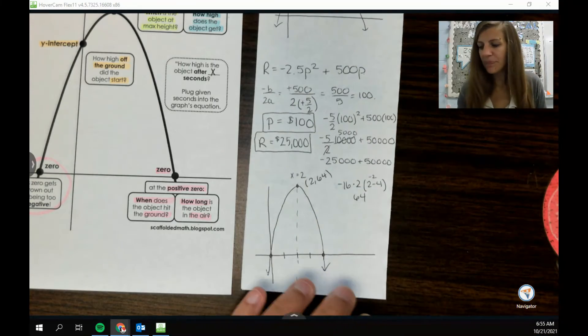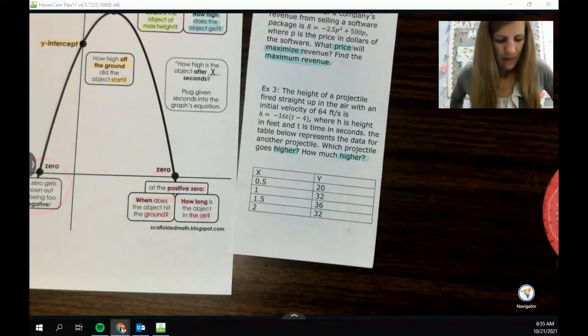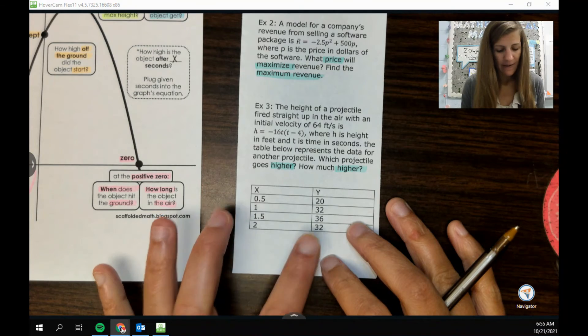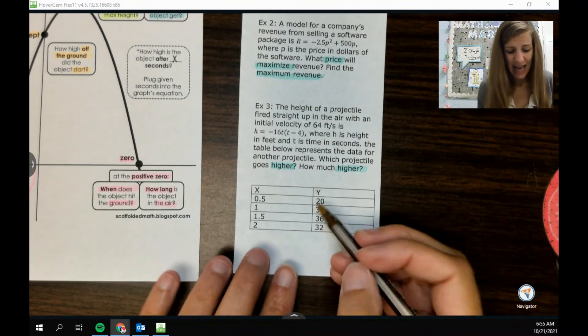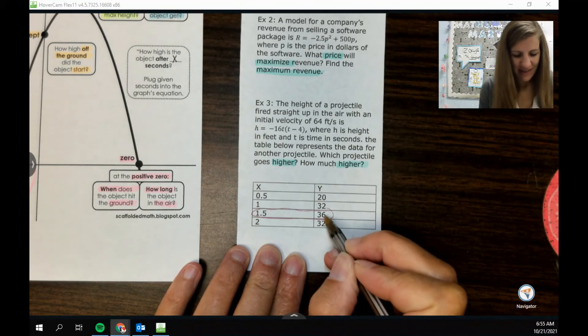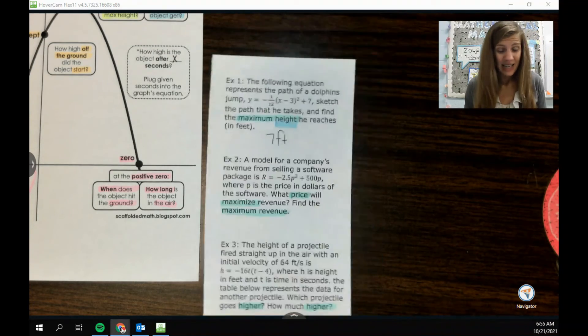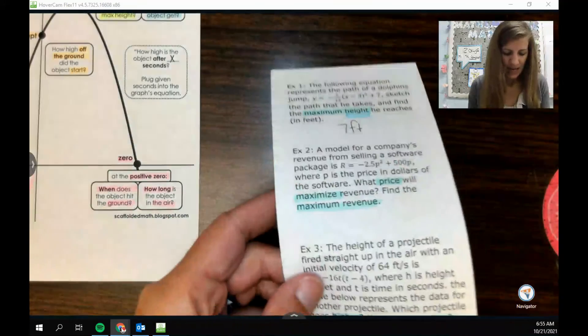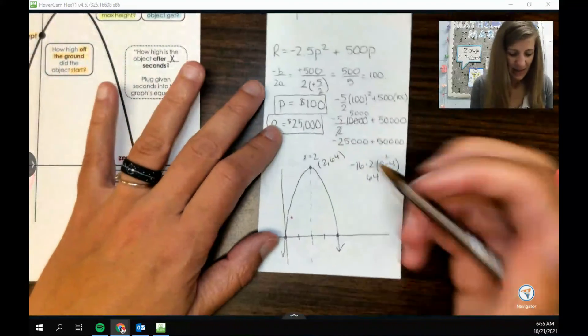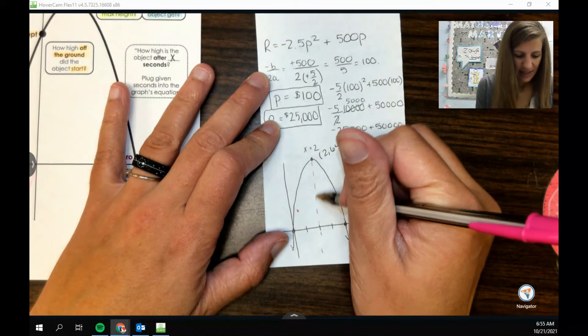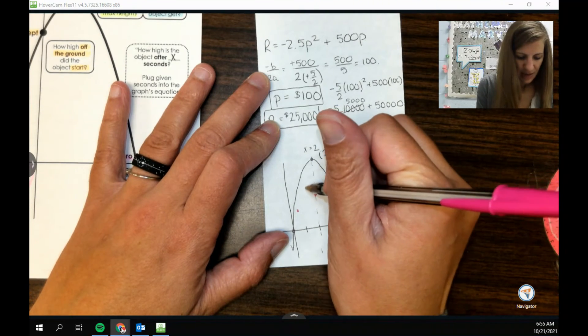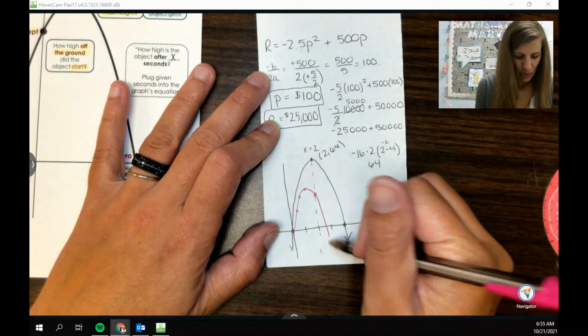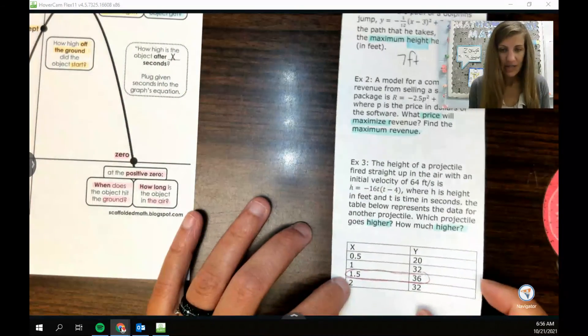But let's go look at our table. Okay, so the table here has our x values and then our height values or our y values. And I feel like I can see that it's only getting up to 36 because like right here starts coming back down. So like that point at 0.5, it was at 20, and then at two it's already back down to 32. So like at the vertex it's half as high as the other one.